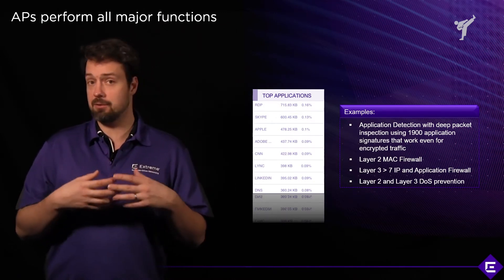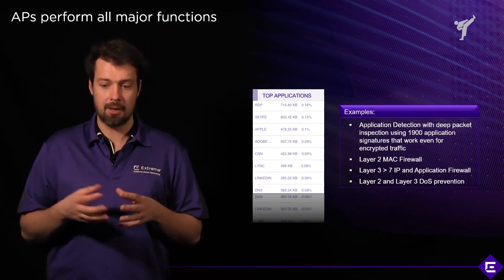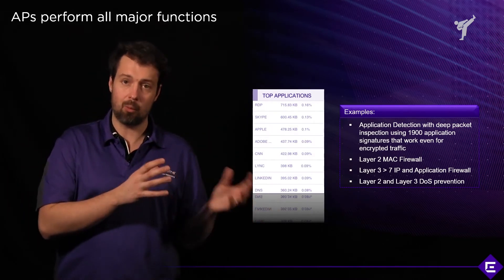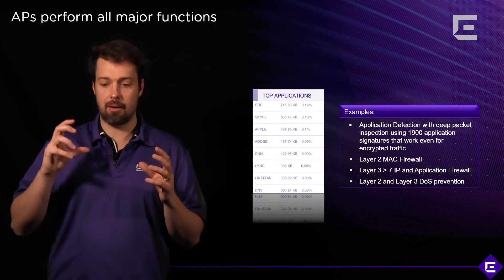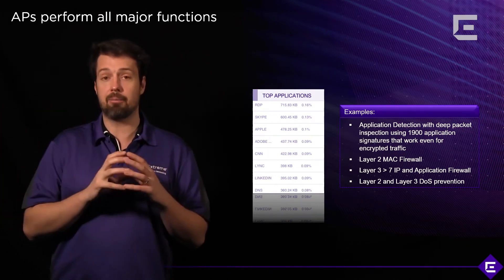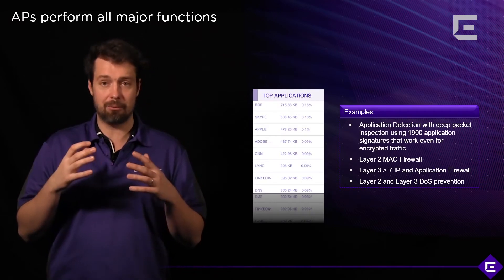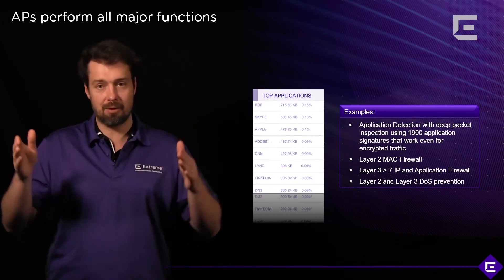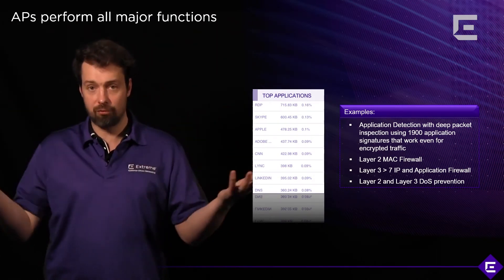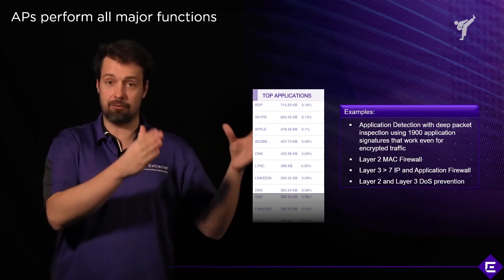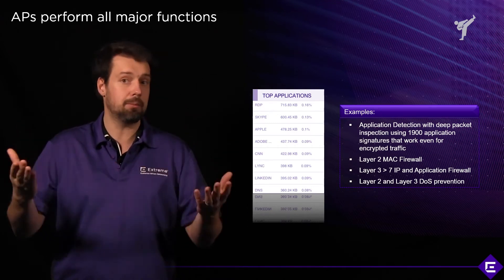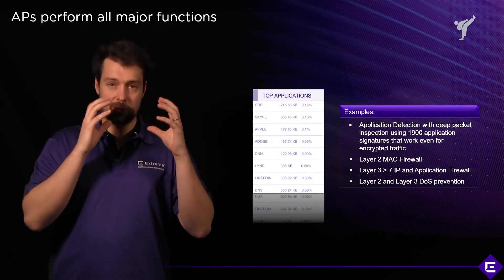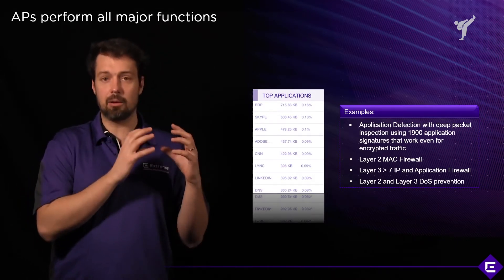The access point implements a forwarding engine, and that forwarding engine is flow-based. The benefit of a flow-based forwarding engine is it will take a minimum toll on your CPU while at the same time providing things like layer 7 firewall and deep packet inspection capabilities. You're able to look into the packets, identify the application, and based on that established flow, apply security policies or QoS policies to it — all done on the AP without affecting local resources too much.